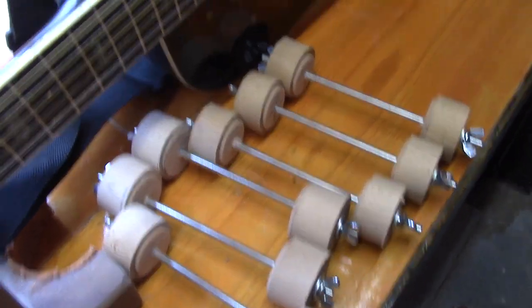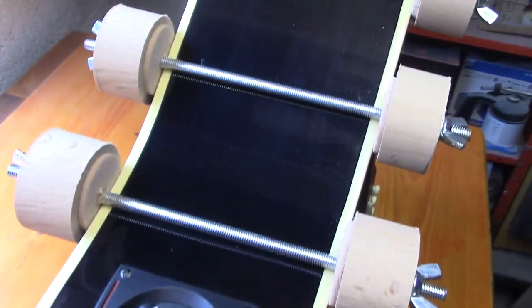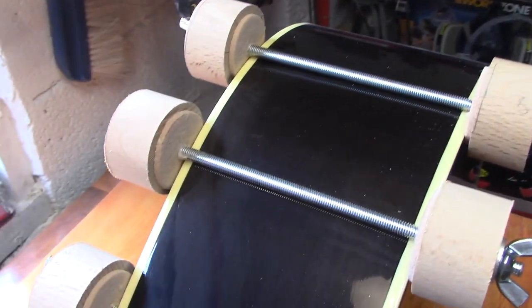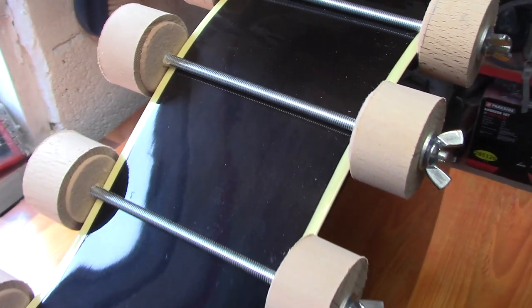Just to show you, this is where we would normally use spool clamps. It would be on the edge of a guitar like this just to provide even pressure coming in on both sides, and we have our felt covering to ensure there's no damage.